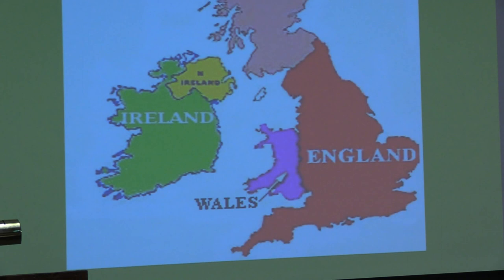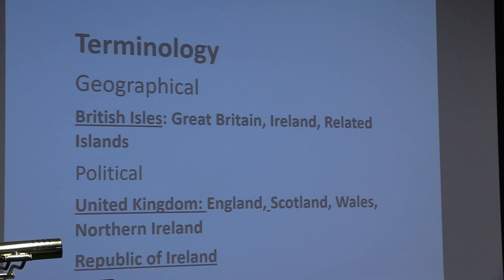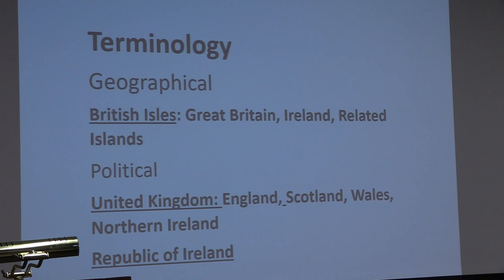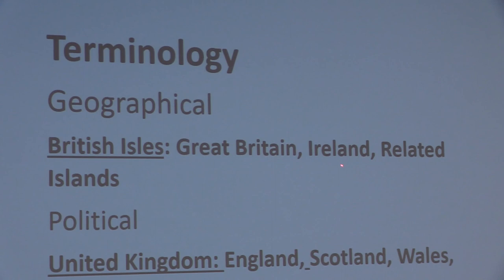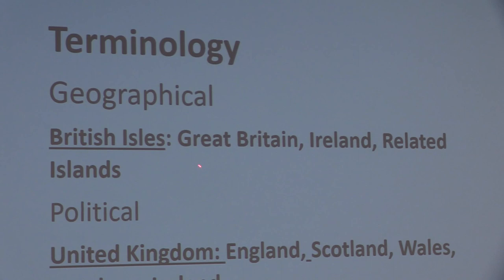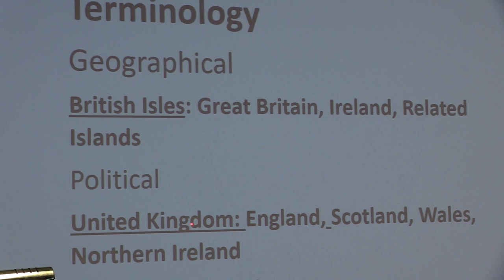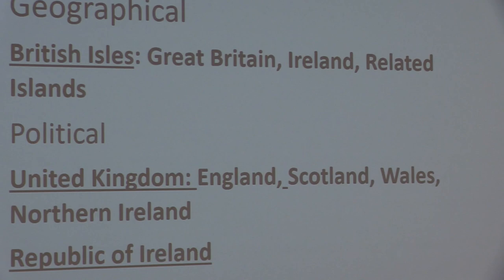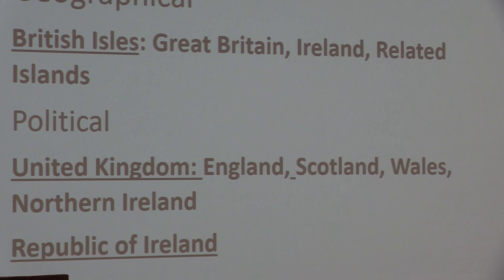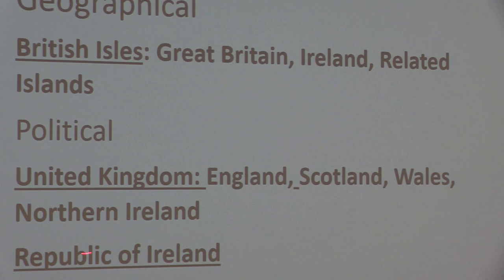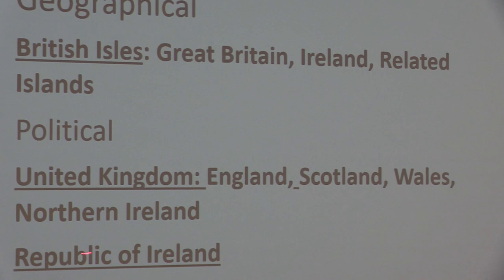One thing people are confused by is the names of the British Isles and the various subdivisions. Being an old high school history teacher, I always start with the basics. Geographically, the British Isles includes the island of Great Britain, Ireland, and many small islands around them. Politically, the United Kingdom is the official government of England, Scotland, Wales, and Northern Ireland — think of those as four states with separate governments under a federal UK. The Republic of Ireland is a separate republic and governmental entity.